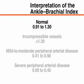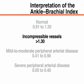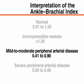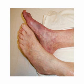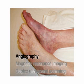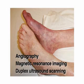A normal ankle brachial index at rest ranges from 0.91 to 1.3. Above 1.3, you should suspect that the patient has incompressible vessels. Decreases in the ankle brachial index are consistent with peripheral arterial disease. Mild to moderate peripheral arterial disease usually produces an ankle brachial index in the range of 0.41 to 0.9. Below 0.4, severe peripheral arterial disease is usually present. Depending on the presentation and symptoms of patients, you may decide to perform additional investigations such as angiography, magnetic resonance imaging, or duplex ultrasound scanning.